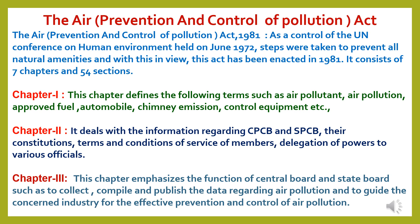Now to study the Air Prevention and Control of Pollution Act. The Air Prevention and Control of Pollution Act 1981 is a result of the UN Conference on Human Environment held in June 1972. Steps were taken to prevent harm to natural amenities, and with this in view, this act was enacted in 1981. It consists of 7 chapters and 54 sections. Chapter 1 defines terms such as air pollutant, air pollution, approved fuel, automobile, chimney emission, control equipment, etc.